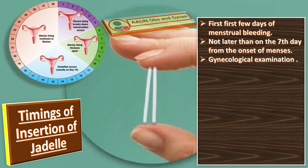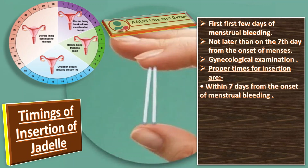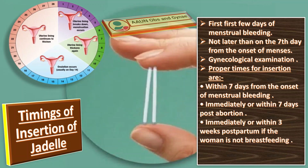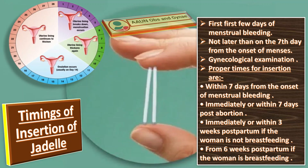The proper times for insertion are: within seven days from the onset of menstrual bleeding; immediately or within seven days post-abortion; immediately or within three weeks postpartum if the woman is not breastfeeding; or from six weeks postpartum if the woman is breastfeeding.